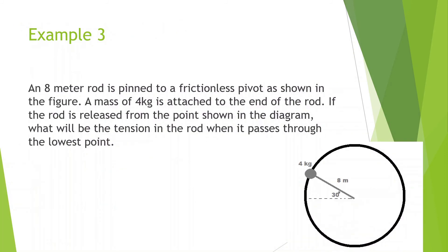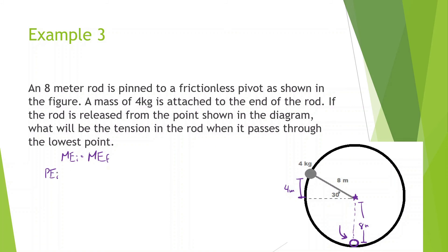Example number three — this one's going to be a bit difficult. An 8-meter rod is pinned to a frictionless pivot. A mass of 4 kilograms is attached to the end of the rod. If the rod is released from the position shown — 30 degrees from horizontal — what will be the tension in the rod when it passes through the lowest point? Since the rod is 8 meters, we use sine of 30 times 8, which gives 4 meters for the height the mass falls. We then use mechanical energy initial equals mechanical energy final.